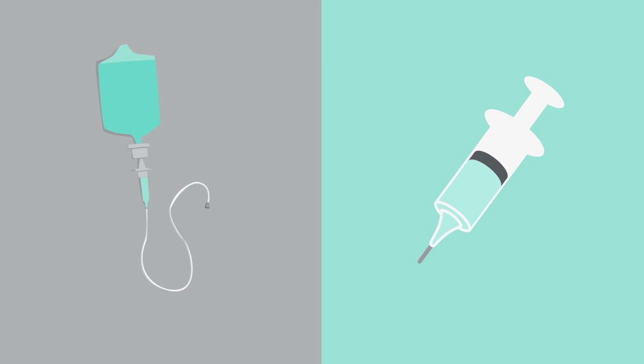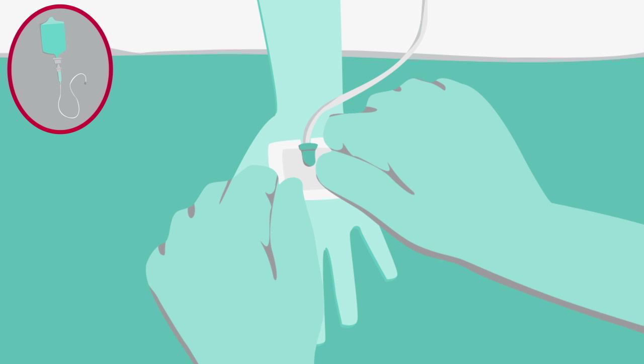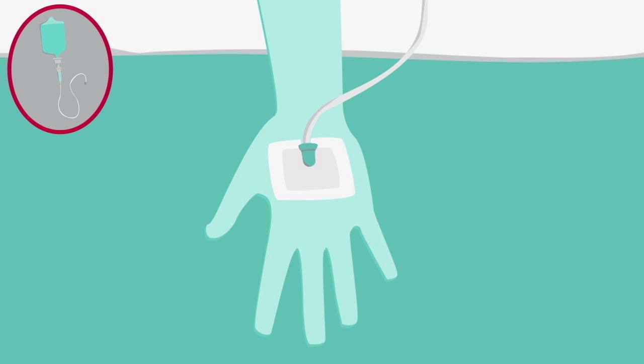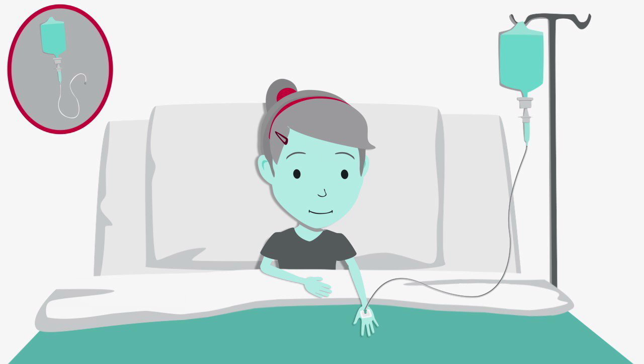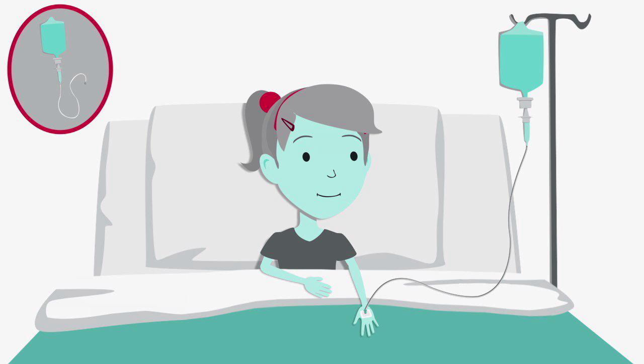Intravenous chemo is taken in two ways. A drip is when a little tube called a cannula is put into your hand or arm using a needle. A nurse does this at the hospital. That looks scary. Does it hurt? Nope. You're given a cream to rub on first. It numbs your skin so you can't feel anything. Once the cannula is in, you'll be hooked up to your medicine.